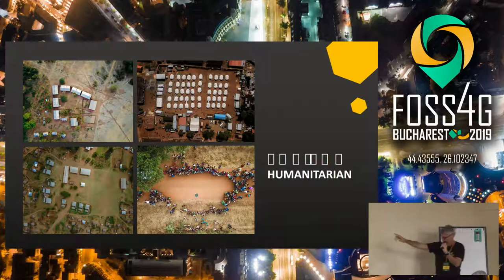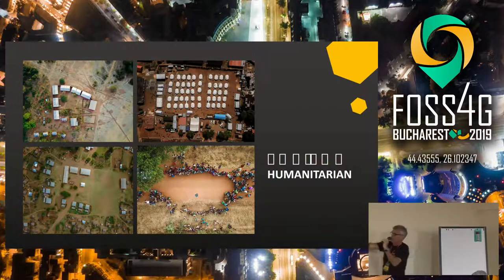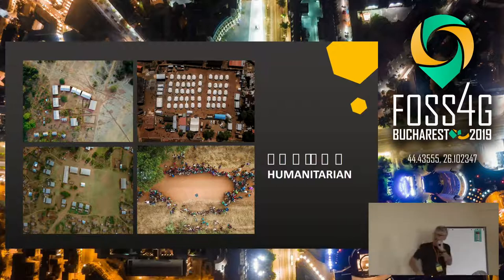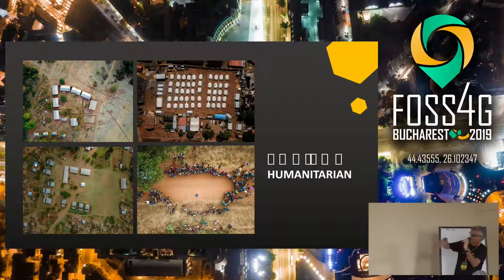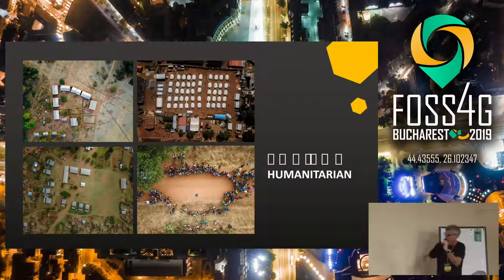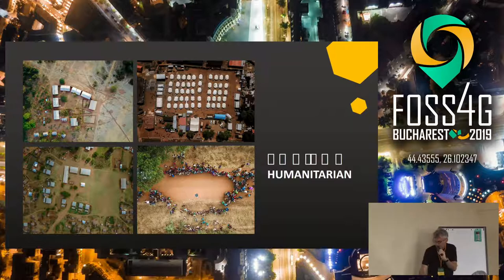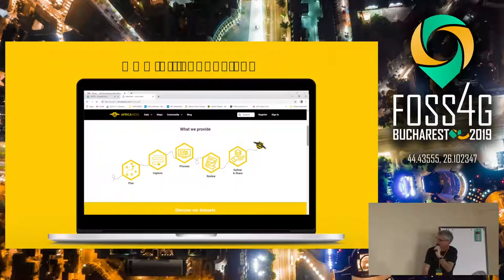Humanitarian: the picture here is an Ebola camp in Freetown – the UN were there. We can pick up features very detailed: there's a school on the left, a hospital down below. We can pick up these features very accurately and map them very quickly.